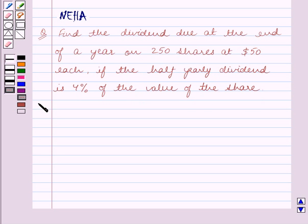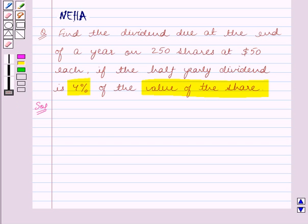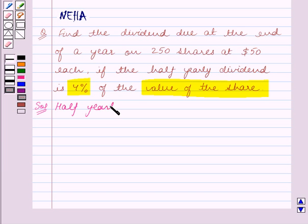Let's start the solution now. First, we will calculate the half-yearly dividend on one share. We are given that the half-yearly dividend is 4% of the value of the share, so the half-yearly dividend on one share